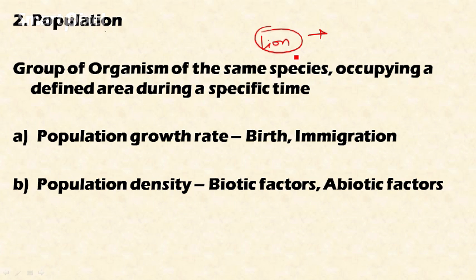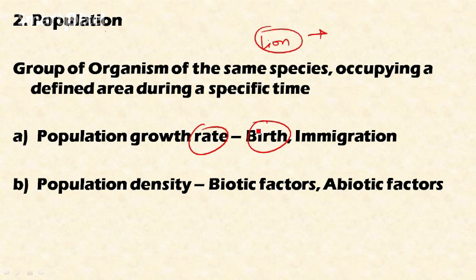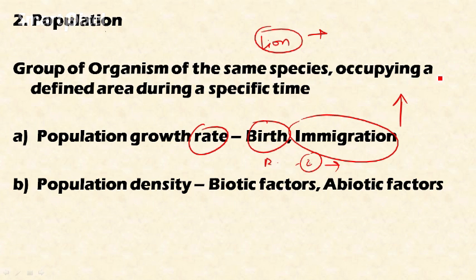We study population using different parameters. Population growth rate is the percentage variation between the number of individuals in a population at two different times. It is influenced by birth and immigration — more births and immigration increase the population growth rate, while more deaths and emigration (movement of population from one place to another) decrease the population growth rate.